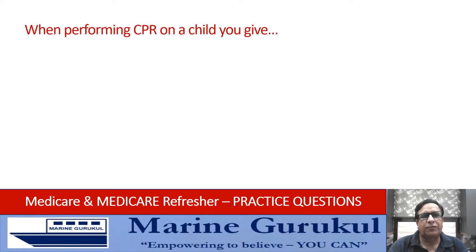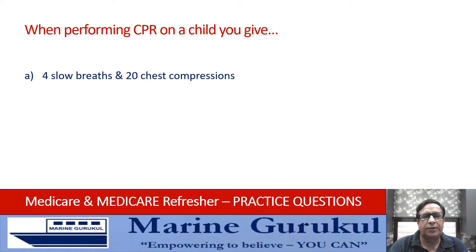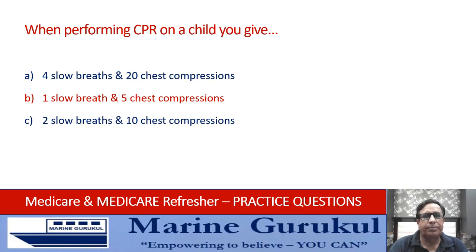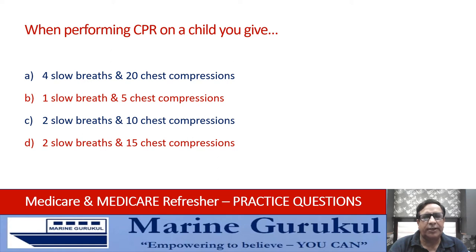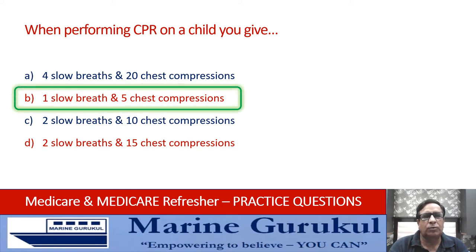When performing CPR on a child, do you give: 4 slow breaths and 20 chest compressions, 1 slow breath and 5 chest compressions, 2 slow breaths and 10 chest compressions, or 2 slow breaths and 15 chest compressions? In case of CPR on a child, the answer is B — 1 slow breath and 5 chest compressions.